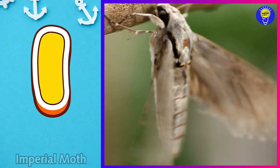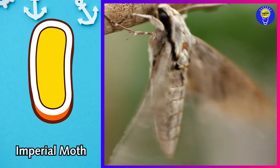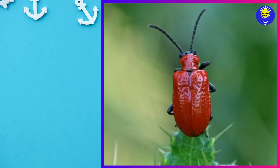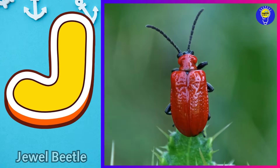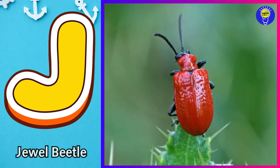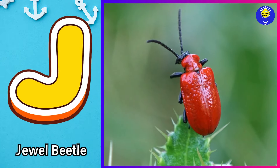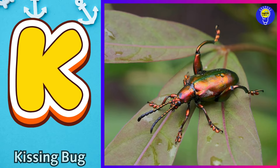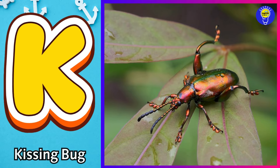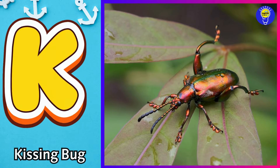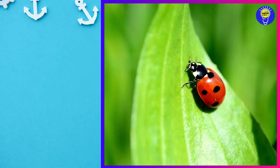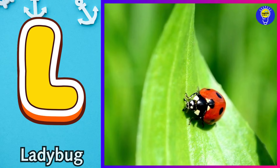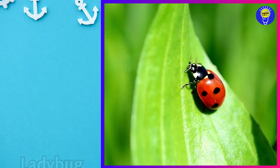I is for imperial moth. e, imperial moth. J is for jewel beetle. j, jewel beetle. K is for kissing bug. c, kissing bug. L is for ladybug. la, ladybug.